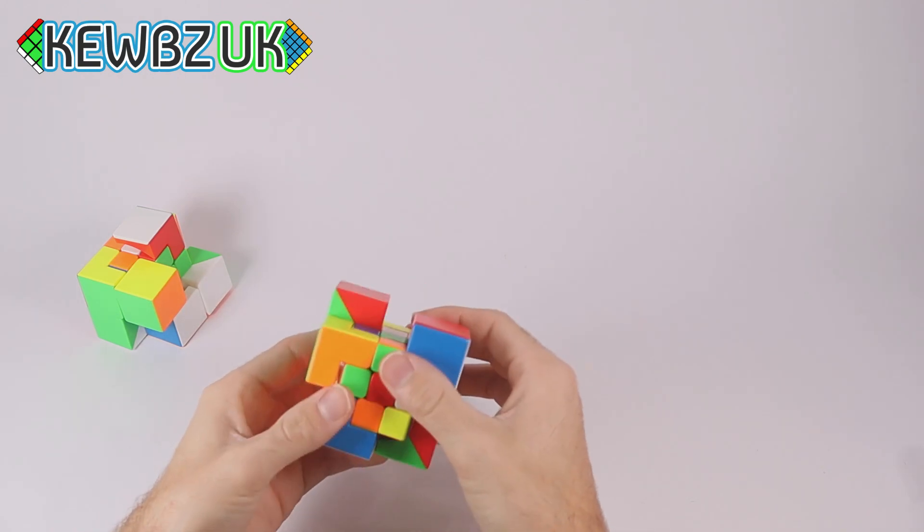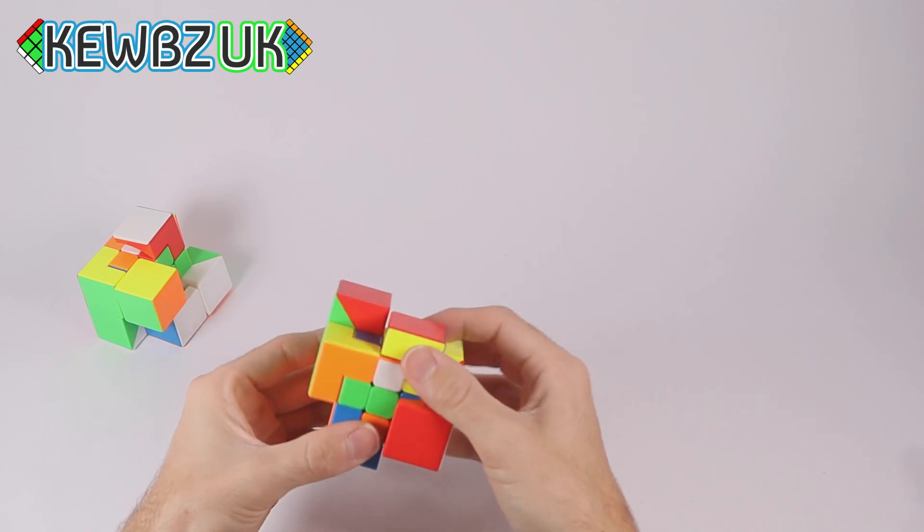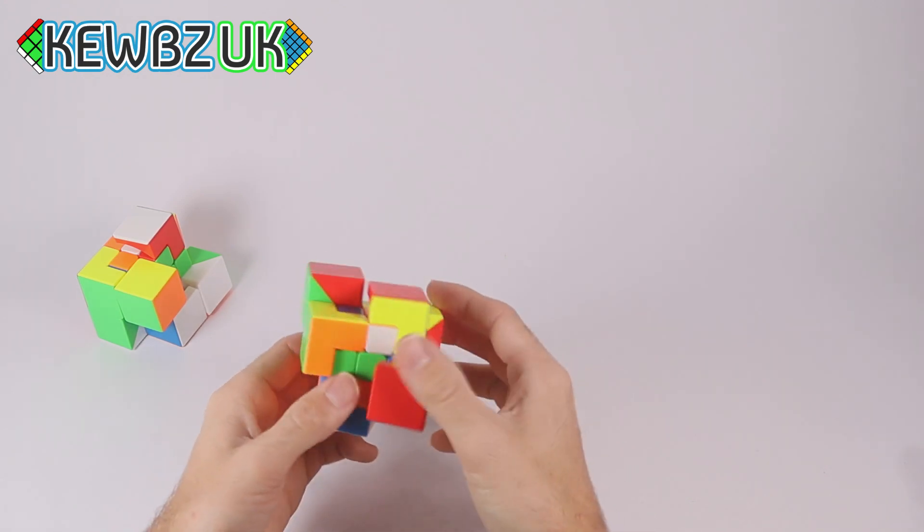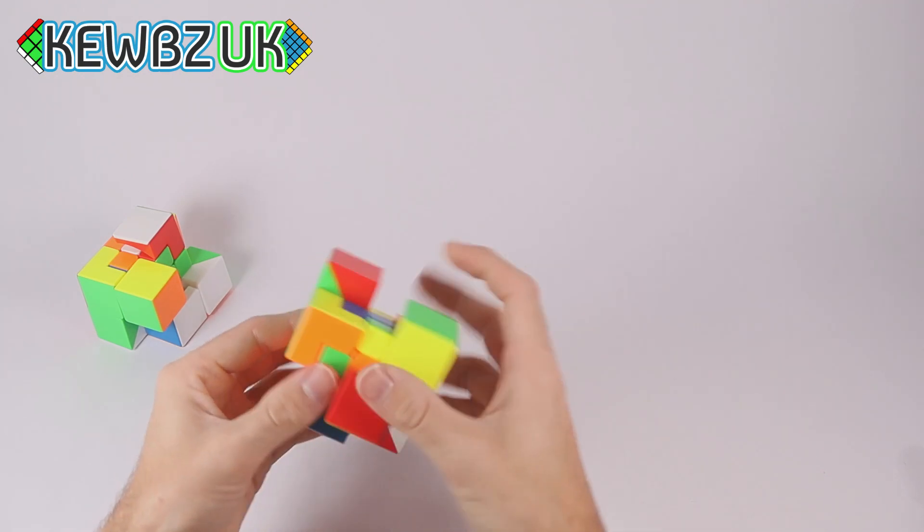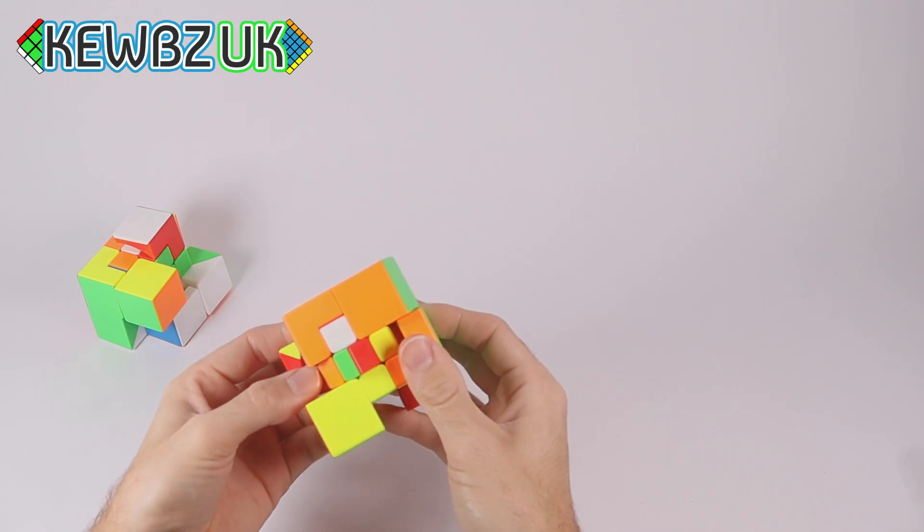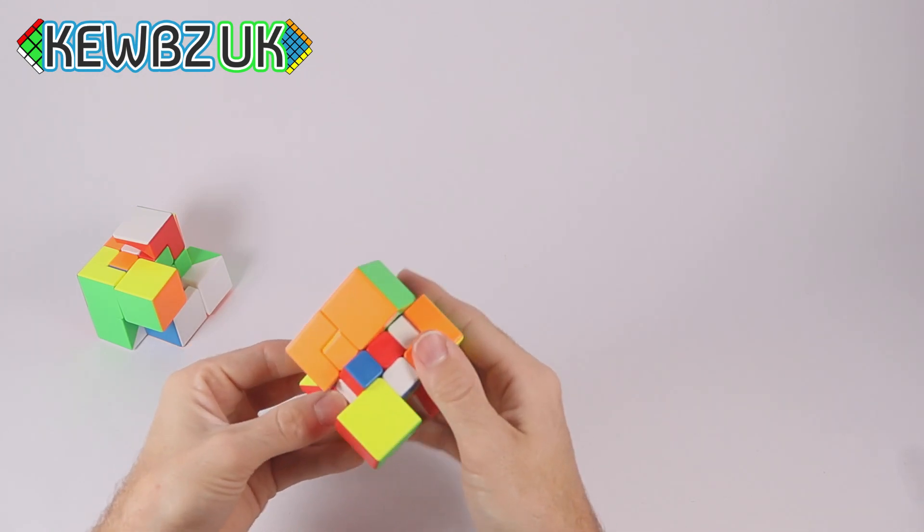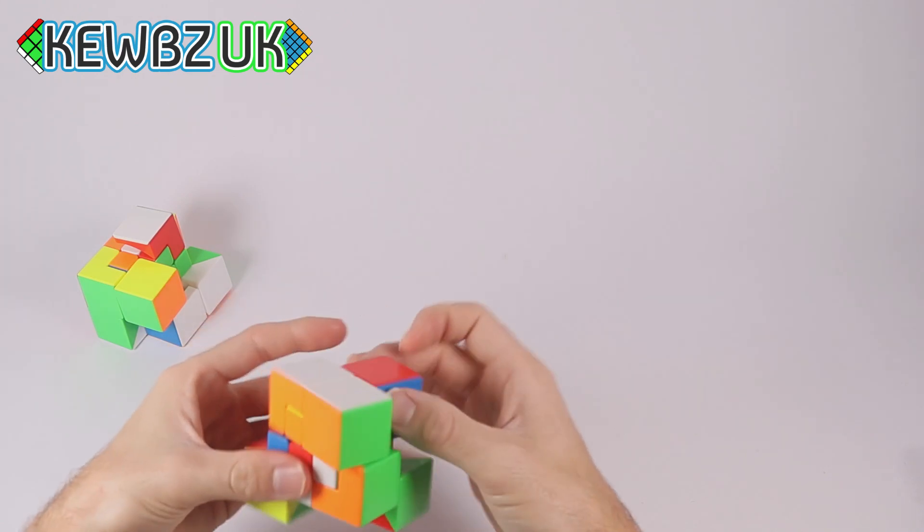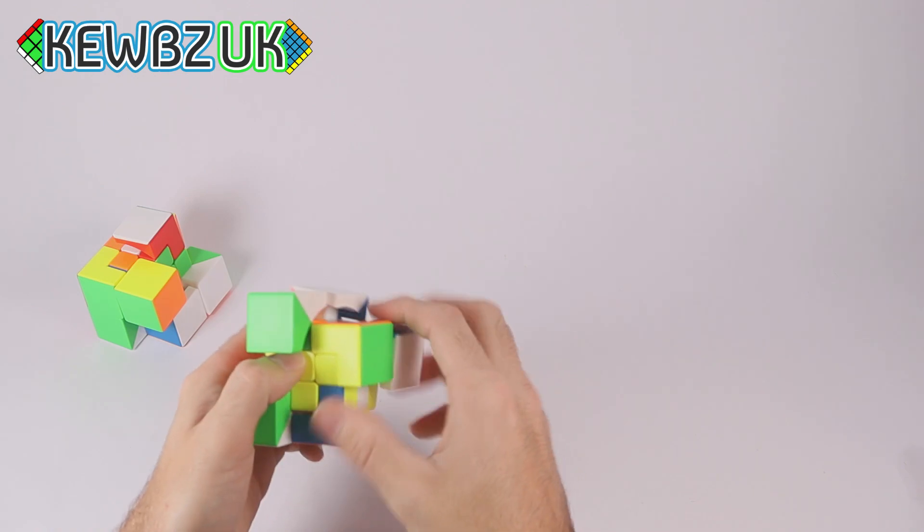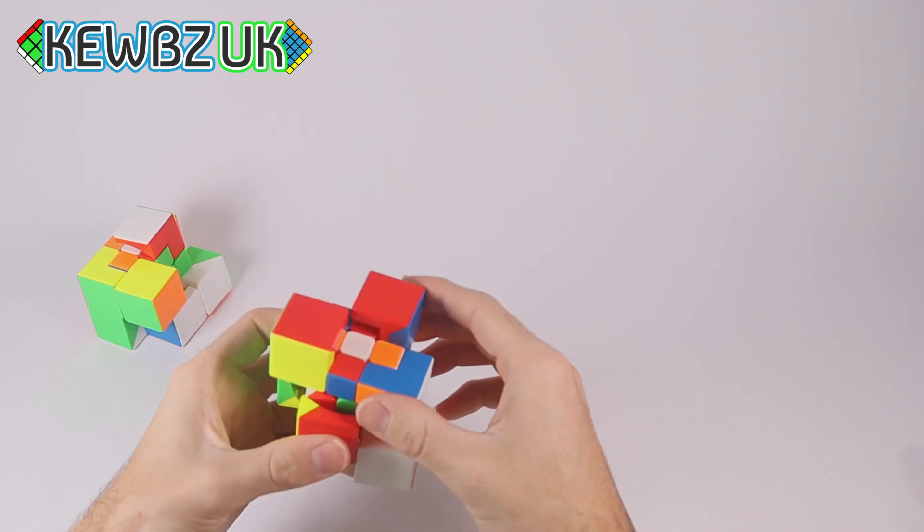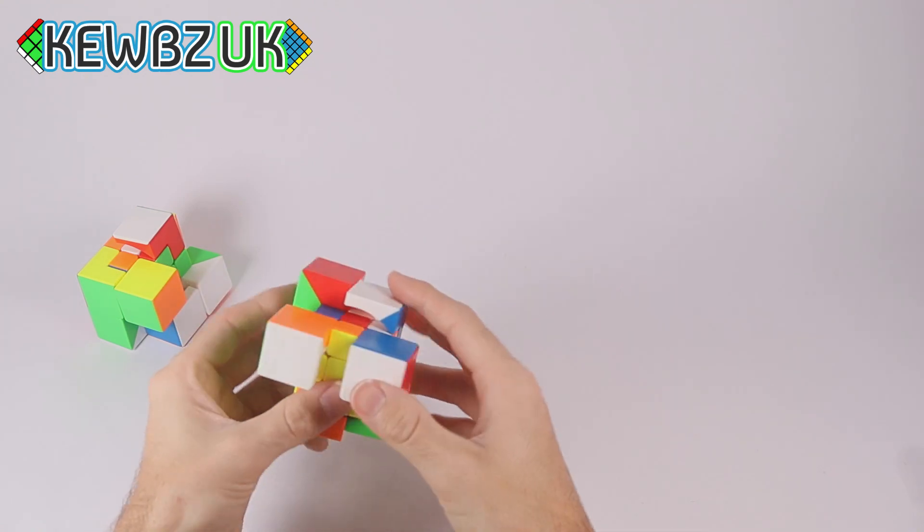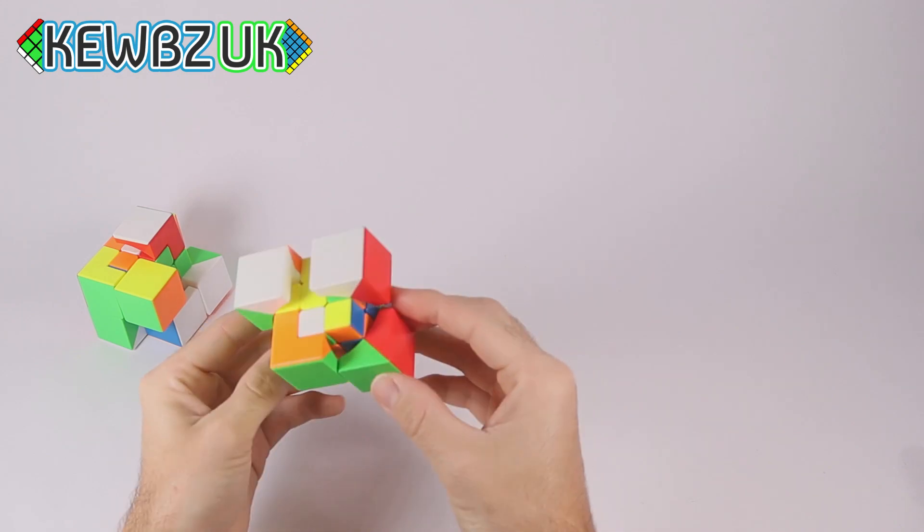And it does turn surprisingly well. You don't really get any lockups. The lockups you do get are just bandaged or bandages. Blimey. There we go. So, it's scrambled and we can still twist that center layer. Just to add to the scramble. Make it even worse. And there we have that one.